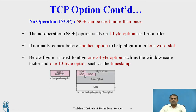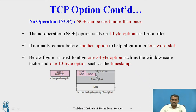The figure below shows NOP used to align one 3-byte option, such as window scale factor, and one 10-byte option, such as timestamp. In the previous diagram we used kind 0; here we use kind 1, which represents the no operation option. The structure contains a 1-byte NOP, followed by a 3-byte option, a 10-byte option, and then the user data. The user can keep any data in the data field.